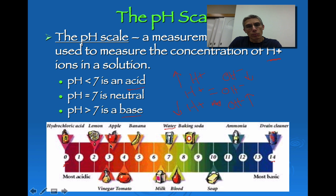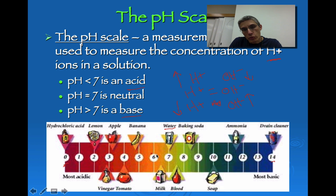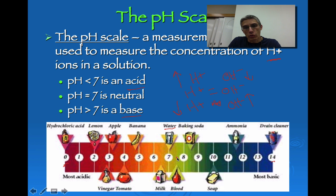Foods like lemons, apples, bananas, vinegar, and tomatoes fall in the acidic range. As pH approaches 0, substances become more acidic. As pH approaches 7, they become less acidic. On the base side, 14 represents a very strong base, while values closer to 7 represent a weaker base.